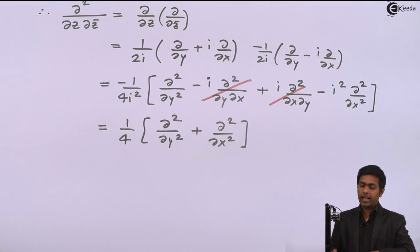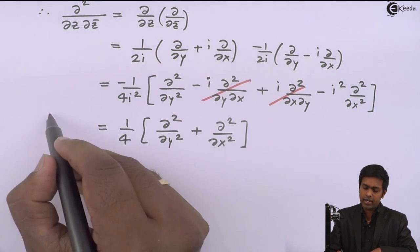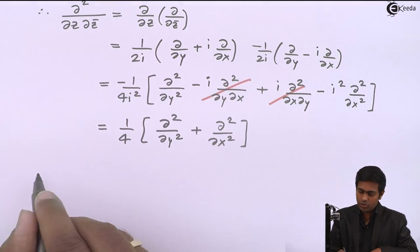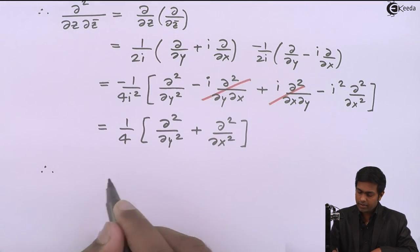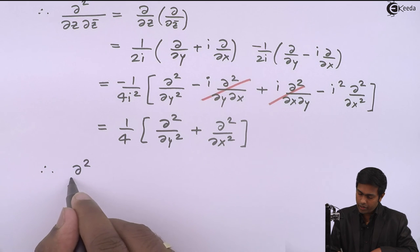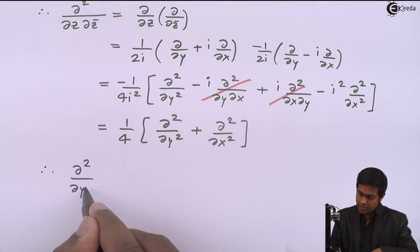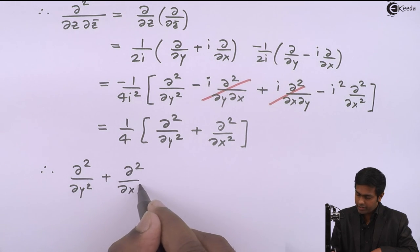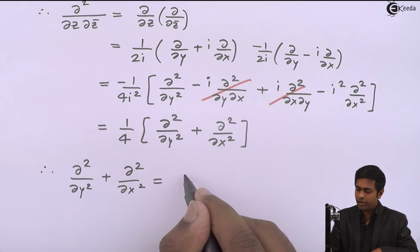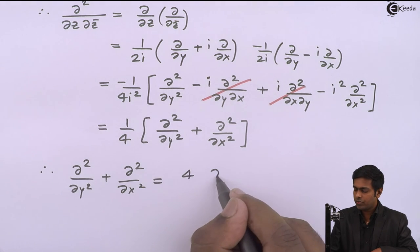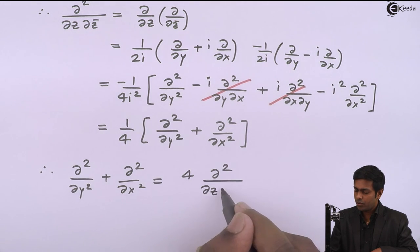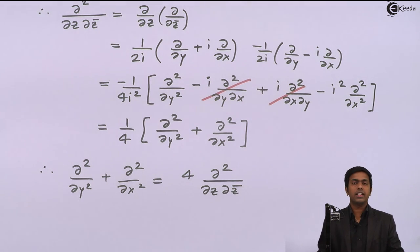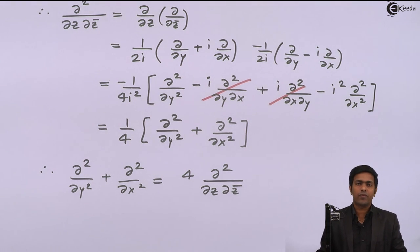Shifting the factor of 4 to the other side, we get ∂²/∂y² + ∂²/∂x² = 4·∂²/∂z∂z̄. This was the required proof. Thank you.